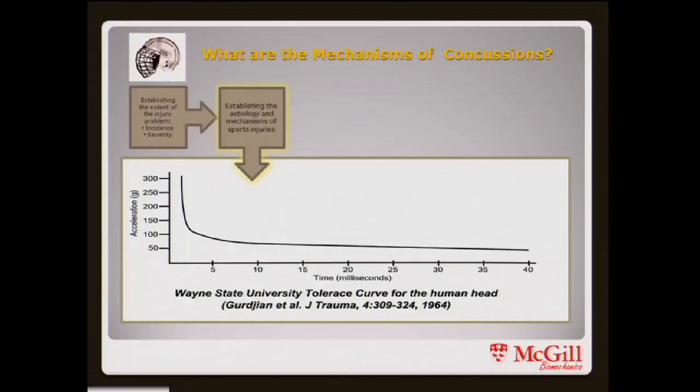So there is a rationale for looking further and trying to identify what actually causes this. Here's some evidence-based modeling looking at acceleration on one axis and time in milliseconds on the other. This was based on animal cadaver testing. The line represents the threshold between injury and safety, so above that curve and to the right would be an injury condition. We can see that acceleration might be one of the key measures in understanding head injury mechanics.